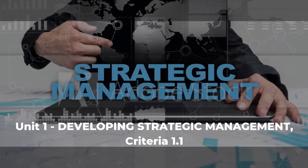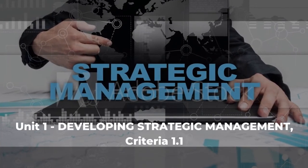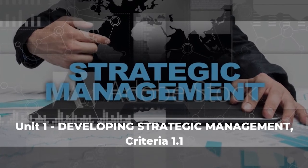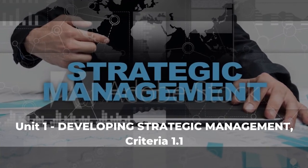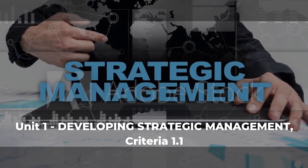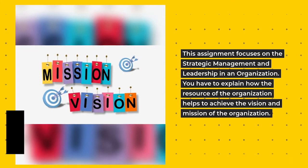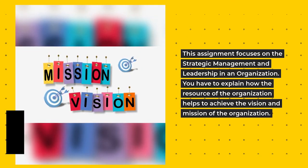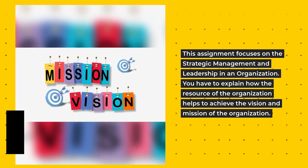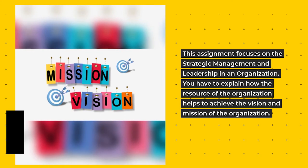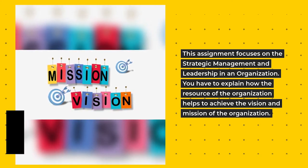Unit 1, Developing Strategic Management, Criteria 1.1. This assignment focuses on the strategic management and leadership in an organization. You have to explain how the resources of the organization help to achieve the vision and mission of the organization.